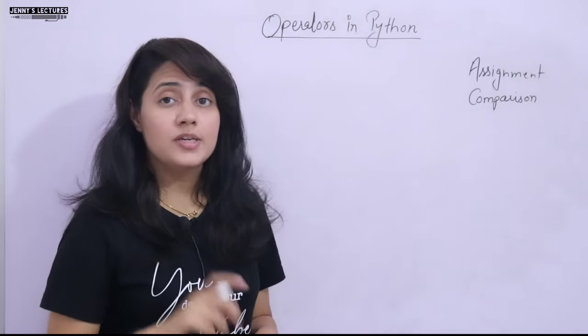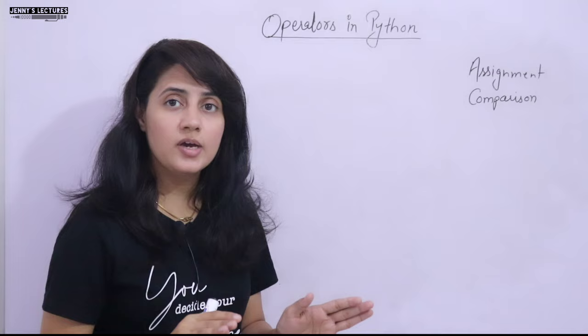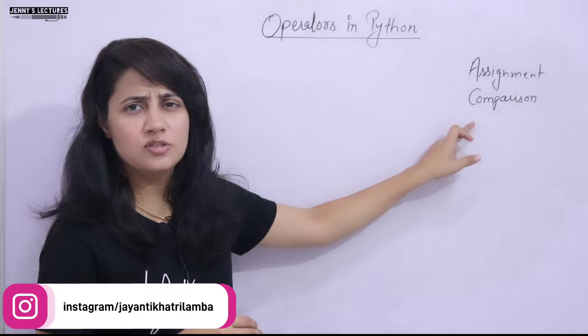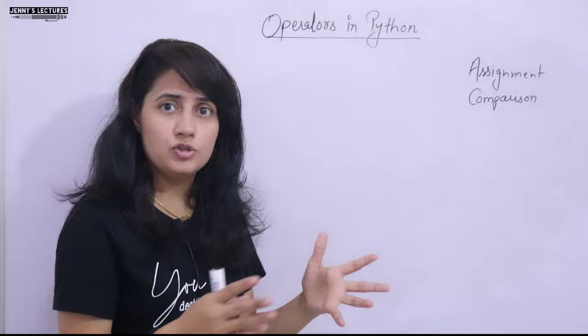In this series on learning Python programming, we are discussing operators. In the previous video we covered arithmetic operators. In this video we'll discuss two types of operators: assignment operators and comparison operators, also called relational operators. We'll go through these with a few examples.